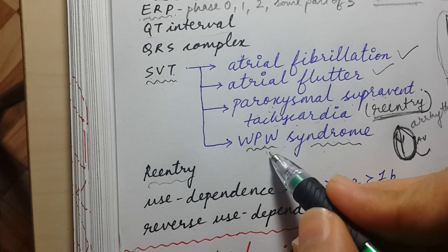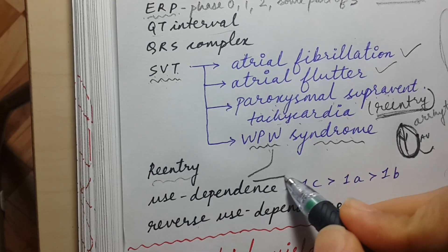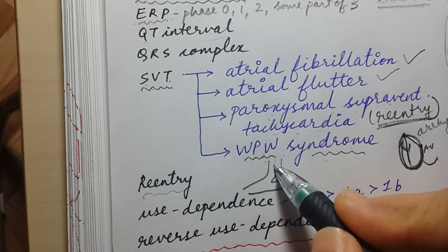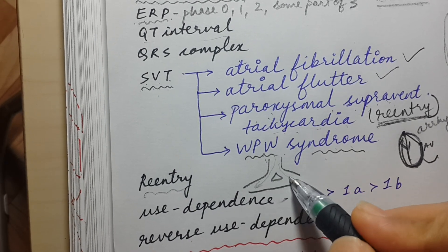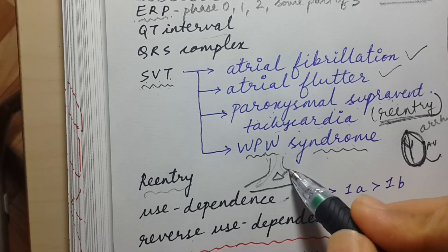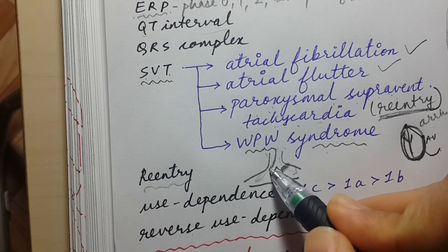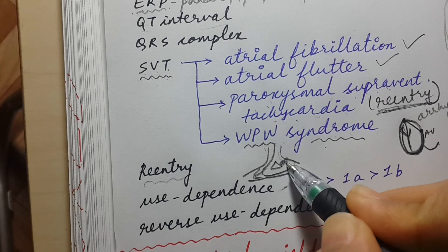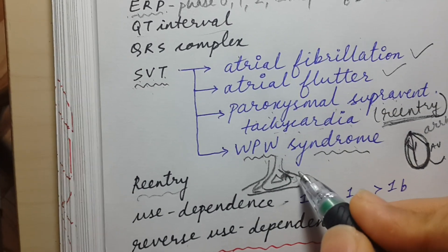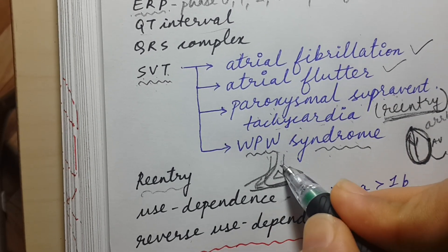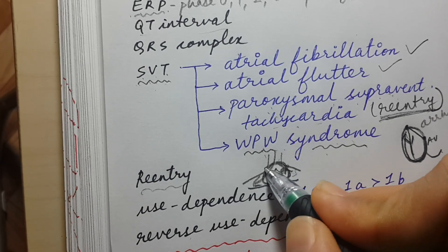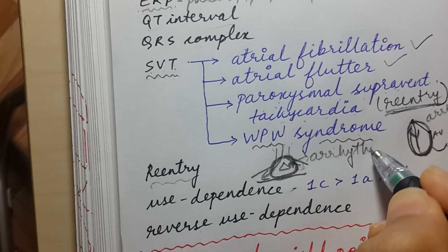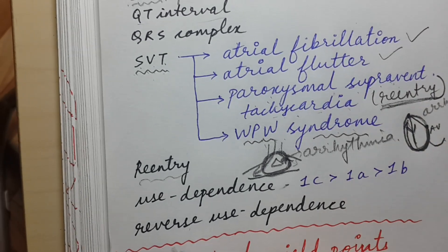In the re-entry phenomenon, normally an impulse travels down both sides of a pathway. If one side is blocked, the impulse goes down the other side, forms a circular loop, and re-enters — creating a short circuit that results in arrhythmia.